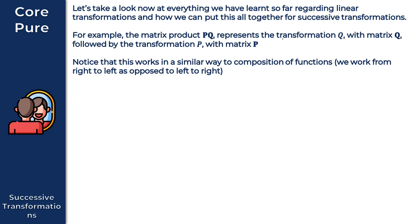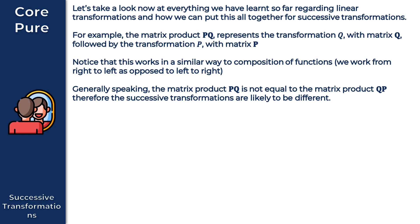So we apply the transformation Q first with matrix Q and then we apply the transformation P with matrix P. Generally speaking, the matrix product PQ will not be equal to the matrix product QP. Therefore, the successive transformations of PQ and QP are likely to be different — that matrix product PQ will not equal QP.